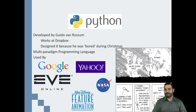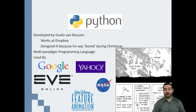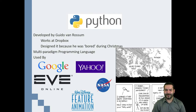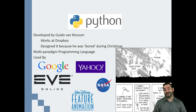One of the things I mentioned is that we're going to be working in Python. Python is just one programming language drop in the bucket. It was developed by Guido van Rossum, who currently works at Dropbox. He did it because he was bored during Christmas one day, which is kind of fun. Tons of companies use Python — Google, Yahoo, Eve Online, NASA, Walt Disney Feature Animation.